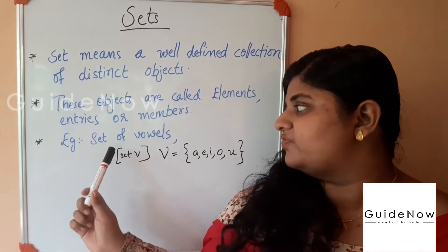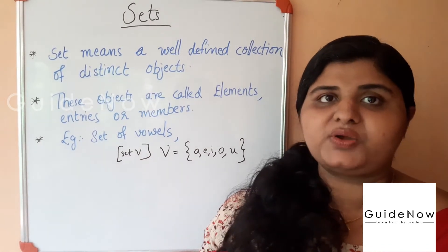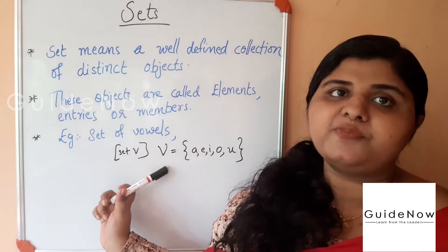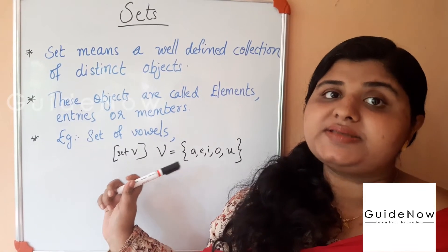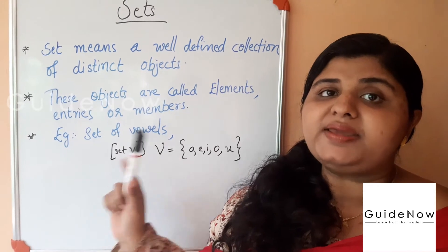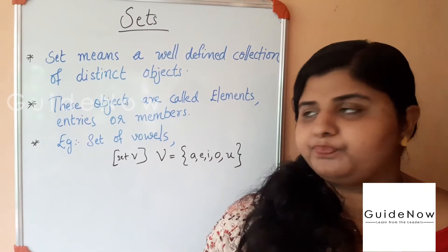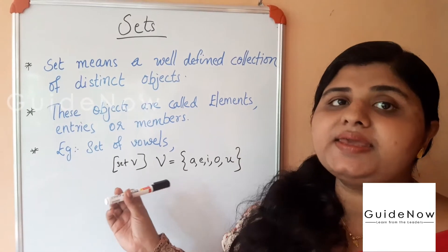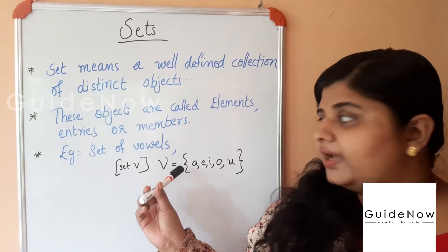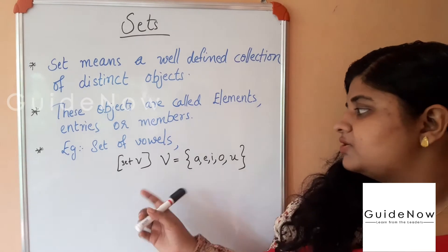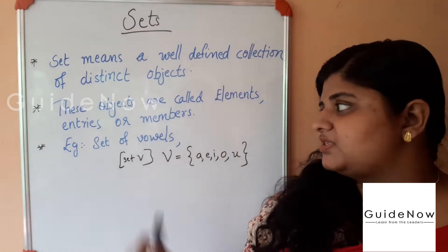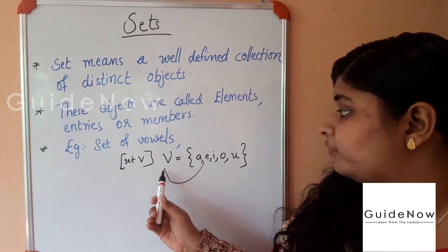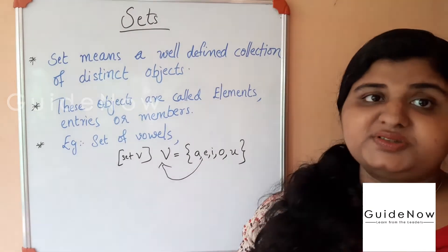Let's discuss an example. Take the set of vowels, which we denote by capital V. Every set is always denoted by a capital letter. The set of vowels V = {a, e, i, o, u}. For example, 'a' is an element of set V.